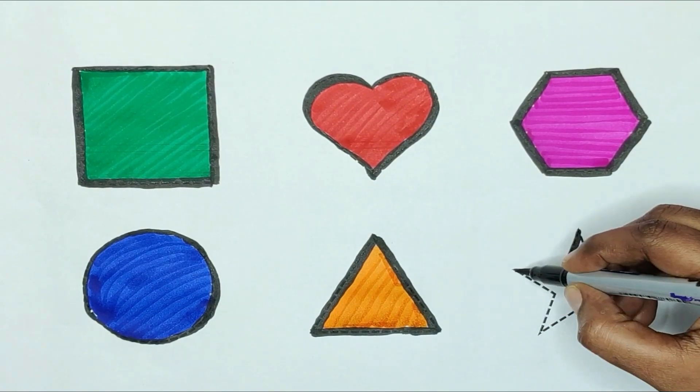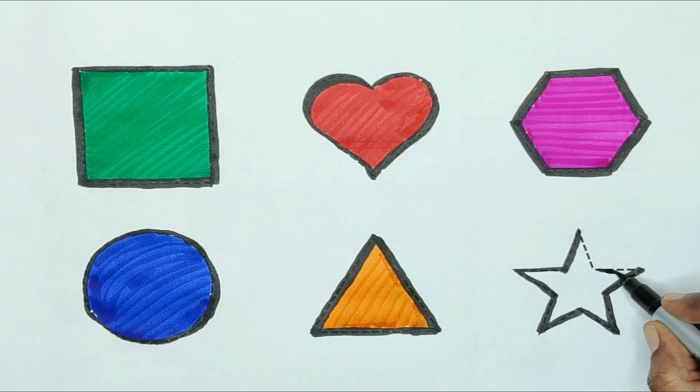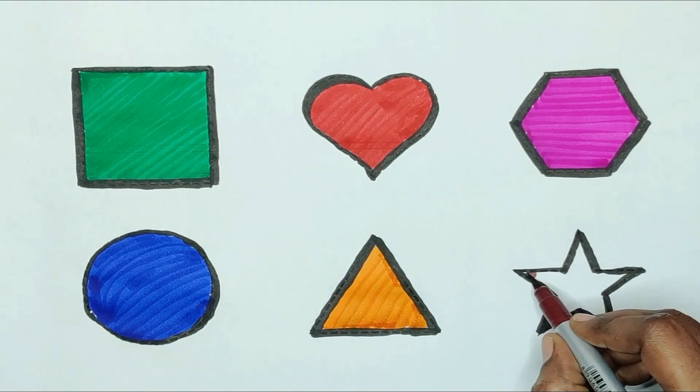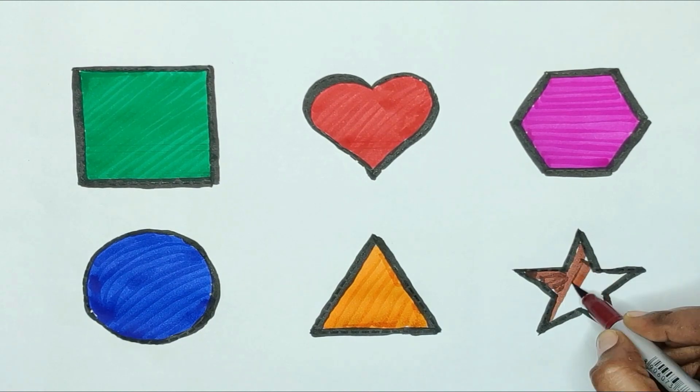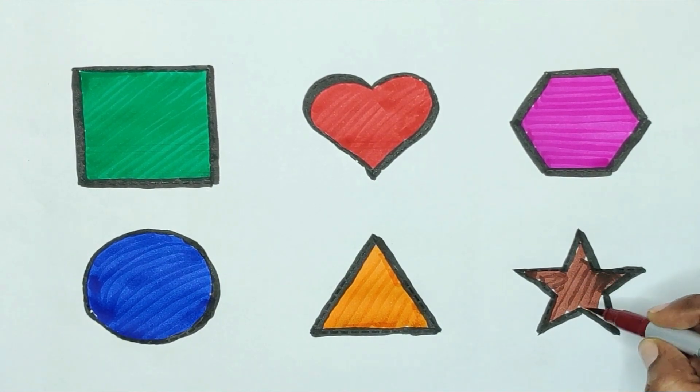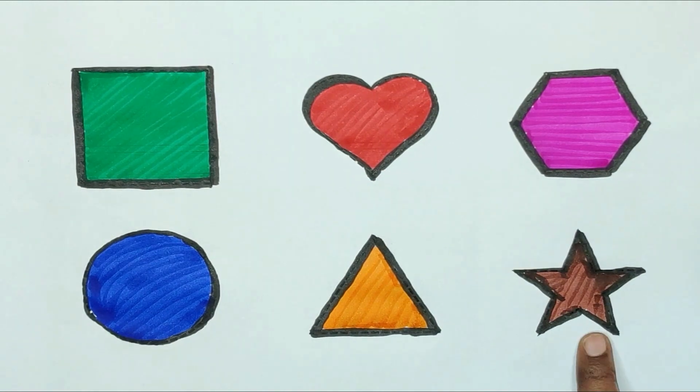Next, star. The shape is star. Brown color. Star shape is brown color.